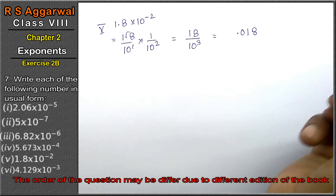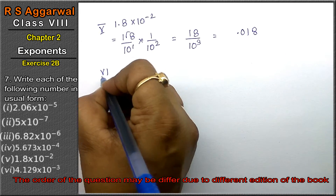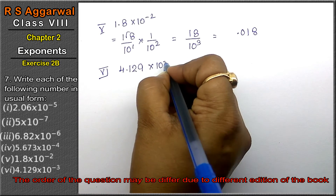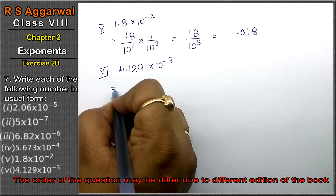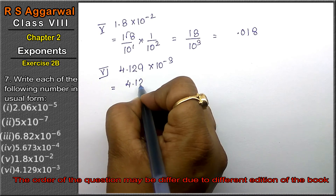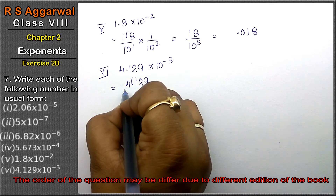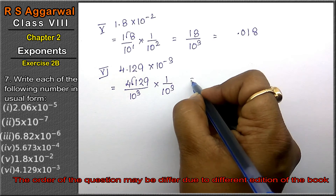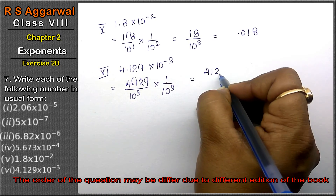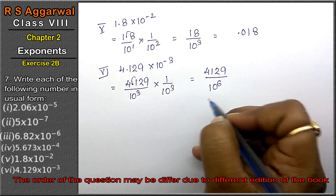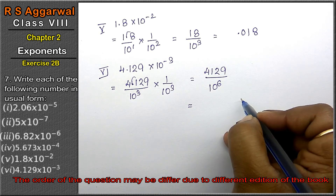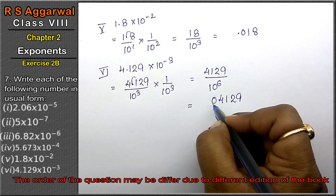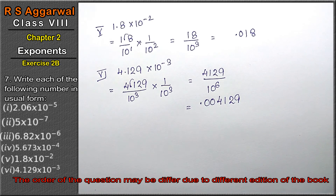Let's do the last part: 4.129 × 10⁻³. That means 4129 upon 10 to the power 6 — after 6 digits we place the point, giving us 0.004129. That is the answer.